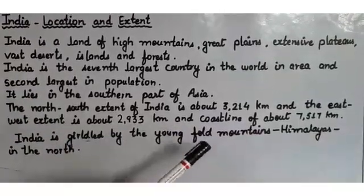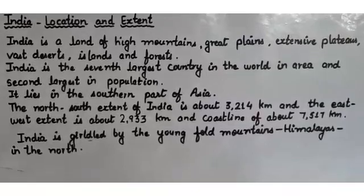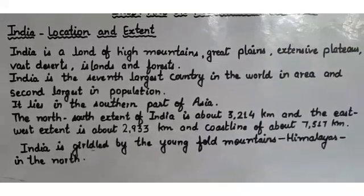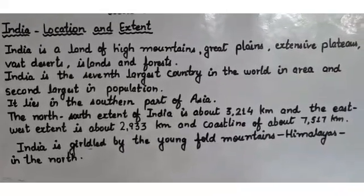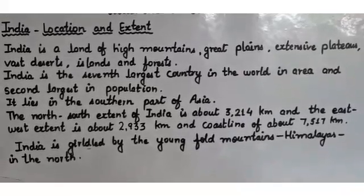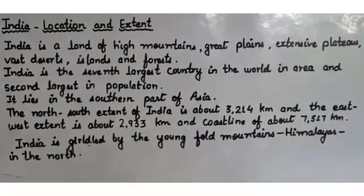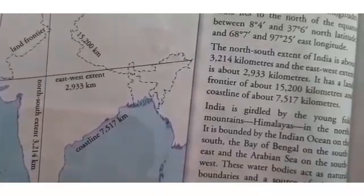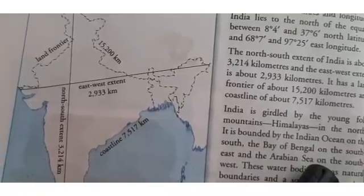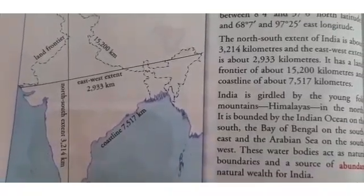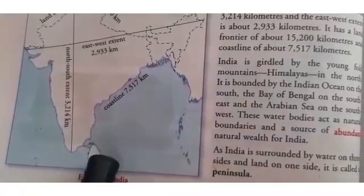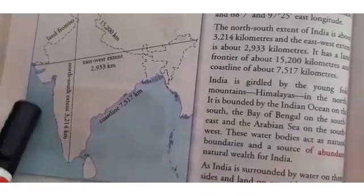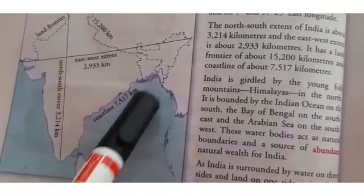India is girdled by the young fold mountains — the Himalayas — in the north. It is bounded by the Indian Ocean on the south, the Bay of Bengal on the southeast, and the Arabian Sea on the southwest. I'll show you on the map of India: this blue part here is the Indian Ocean to the south, this is the Bay of Bengal to the southeast.